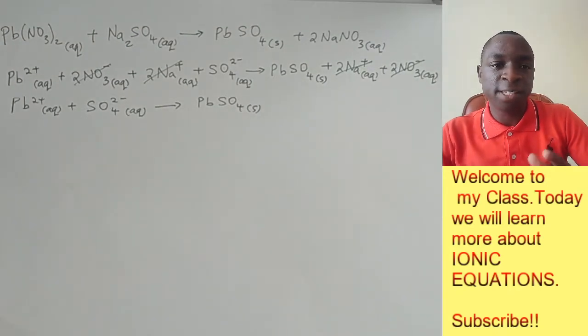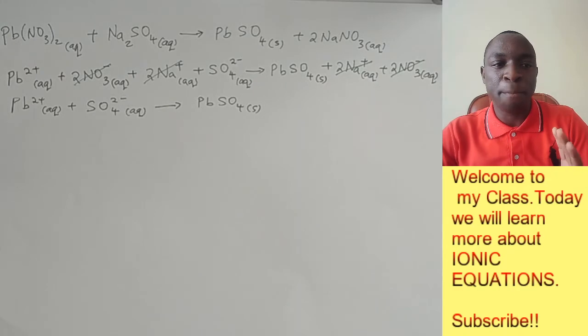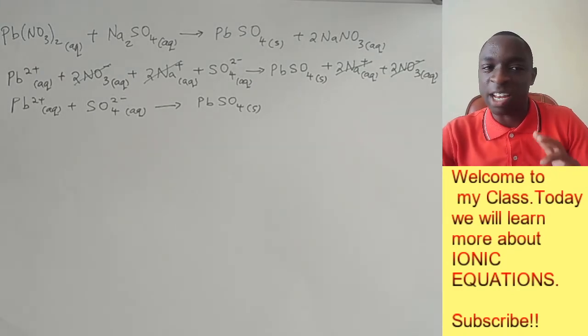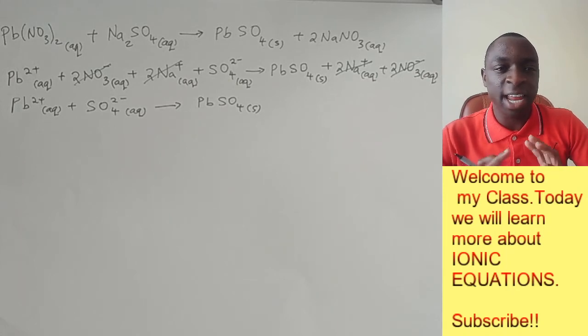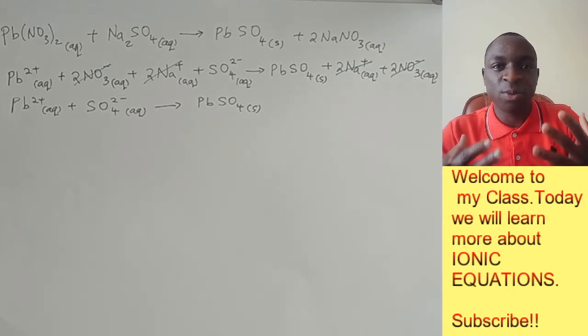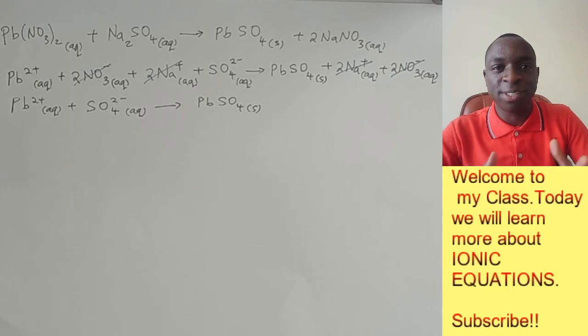So just to recap, first thing, you write the correct balanced chemical equation. And if you don't know about it, check out my previous videos. Then you look for anything that is in aqueous state. And that is what you split into its constituent ions.